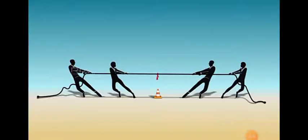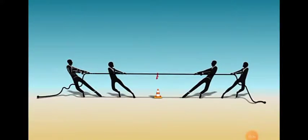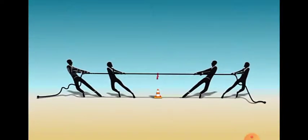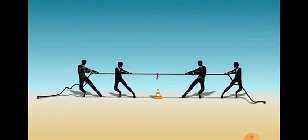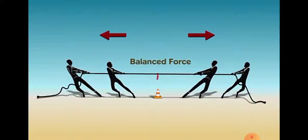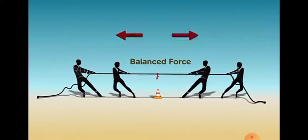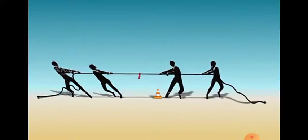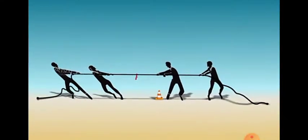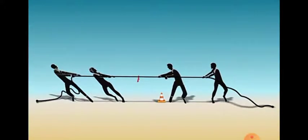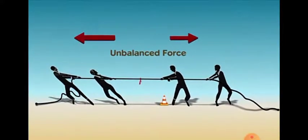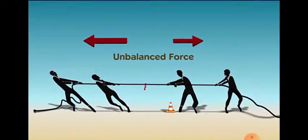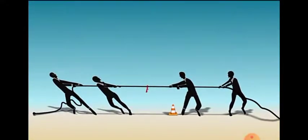You must have played tug of war. So long as the forces applied by both sides are equal — that is, balanced — the center of the rope is static in spite of the applied forces. On the other hand, when the applied forces become unequal — that is, unbalanced — a net force gets applied in the direction of the greater force and the center of the rope shifts in that direction.